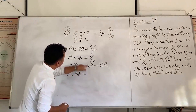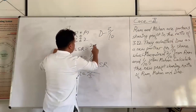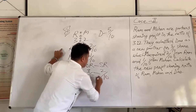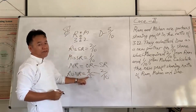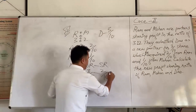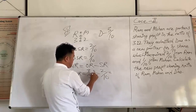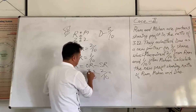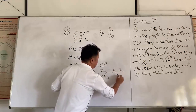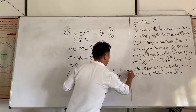Now let's find Ram's new ratio. Ram's old ratio is 3 by 5, minus his sacrifice ratio of 2 by 10. To make denominators the same we multiply 3 by 5 by 2 to get 6 by 10. So Ram's new ratio is 6 minus 2 divided by 10, which is 4 by 10.